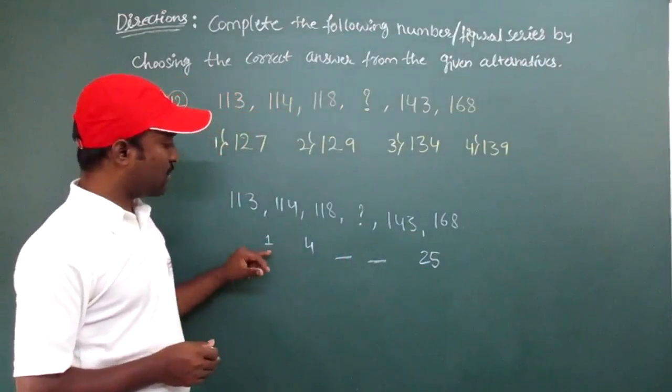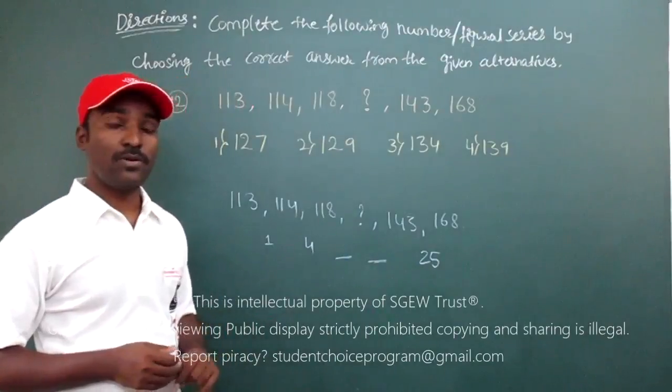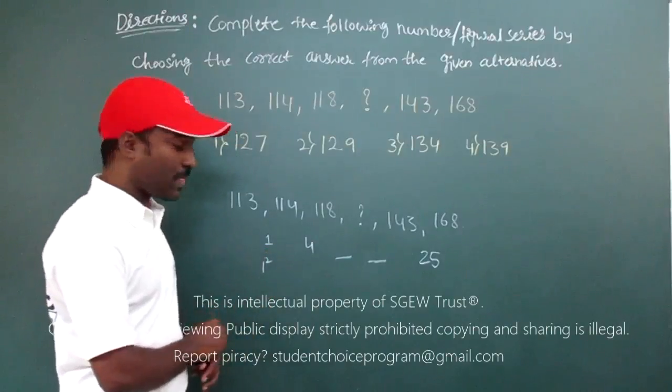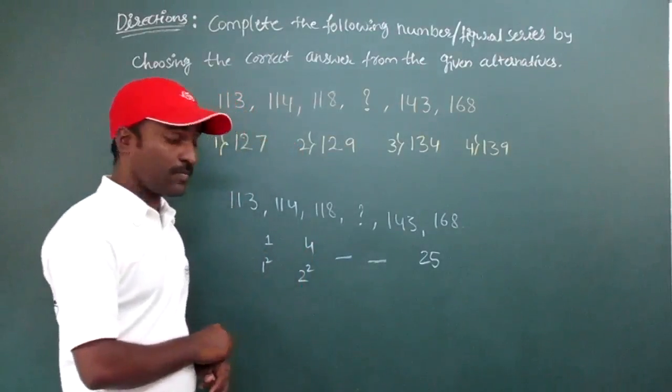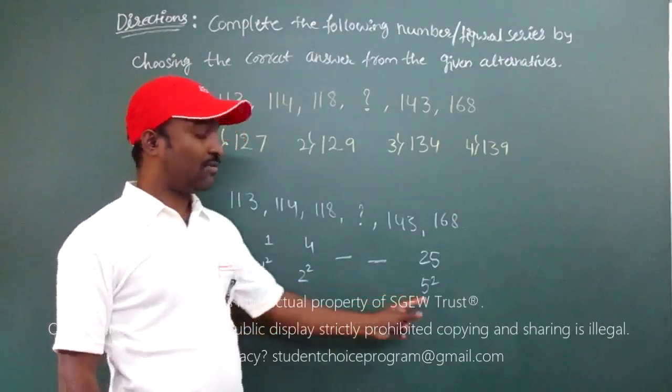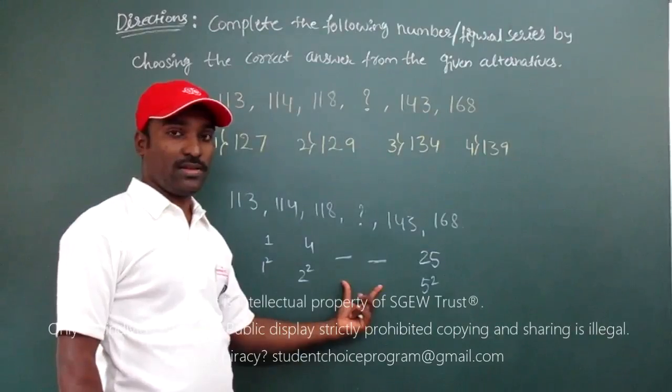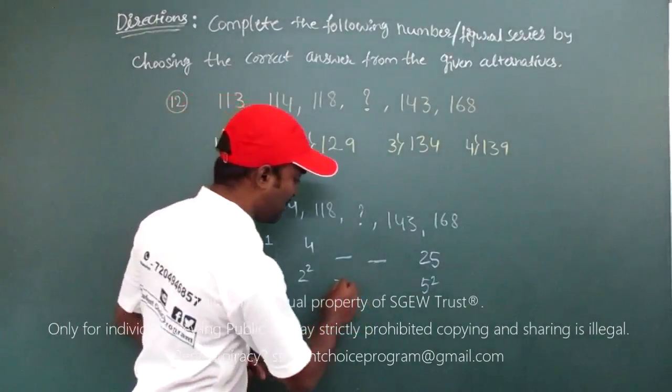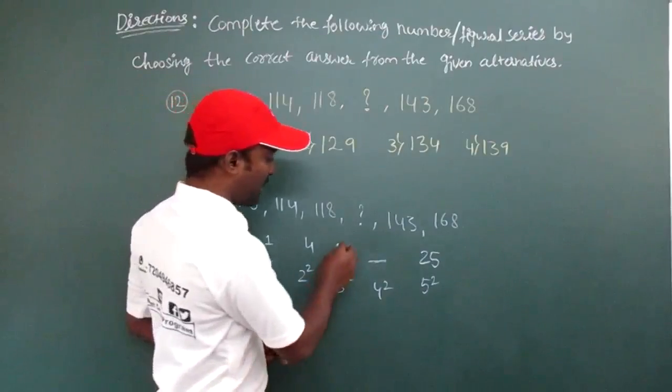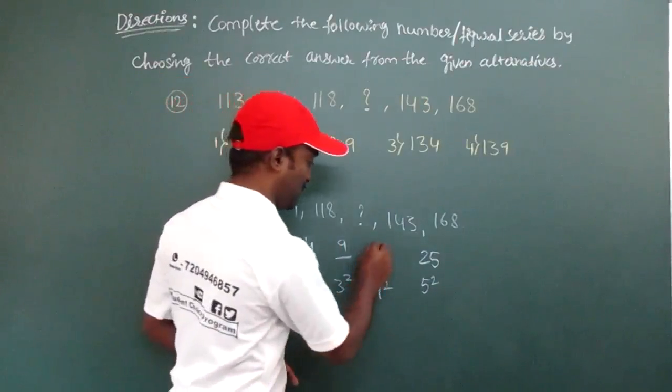Now we got the difference as 25 here. If you observe these numbers: 1, 4, 25. How they are appearing? Yes, there are squares. 1 square is 1, 2 square is 4, this is 5 square. So here is a series: 1 square, 2 square, 5 square. Here I am missing with 2 numbers, they are 3 square, 4 square. Now I will get 9 here because 3 square is 9, 4 square is 16.